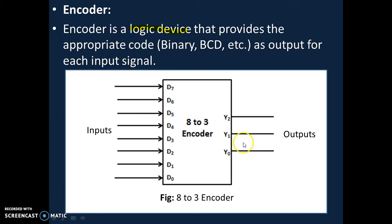So when D7 is the highest active input, output will be 111 — Y2=1, Y1=1, Y0=1. Similarly, if D3 and D2 are made high, then the code for D3 will be generated, since priority increases from D0 to D7. If D7 and D5 are made high simultaneously, then code for D7 is generated towards the output. That's the concept of the priority encoder.